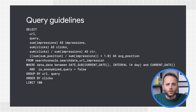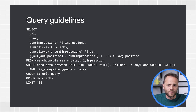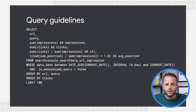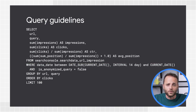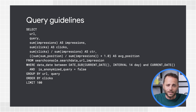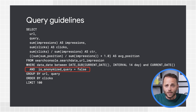Second, try to limit queries by date whenever possible. This will speed up requests and save processing costs. You can do that by using a WHERE clause to limit the date range in the date partition table. In this case, we're limiting it to the last two weeks. And third, filter out no-query strings, which will help decrease the size of the data request. You can do that by pulling data only for rows where the is_anonymized_query field is false.